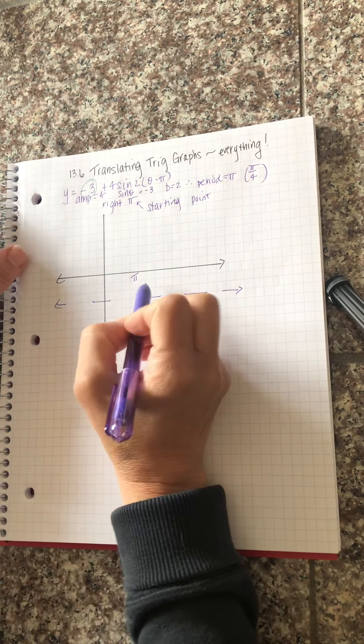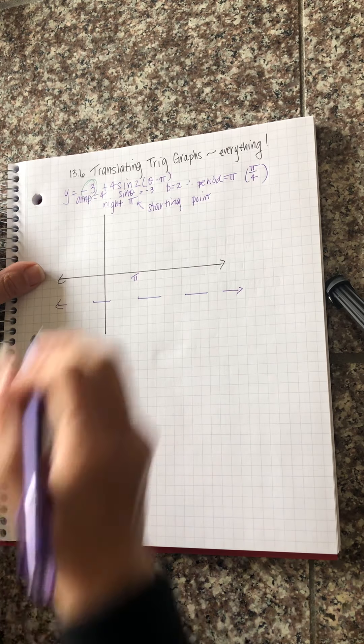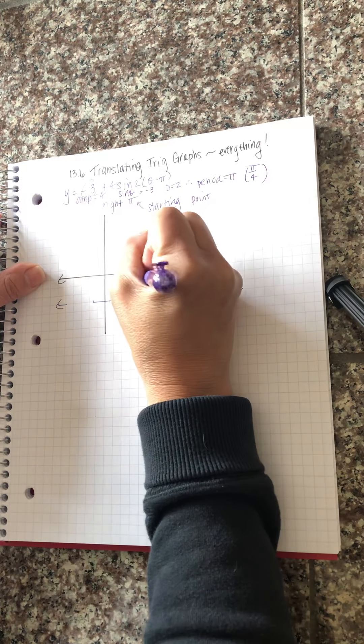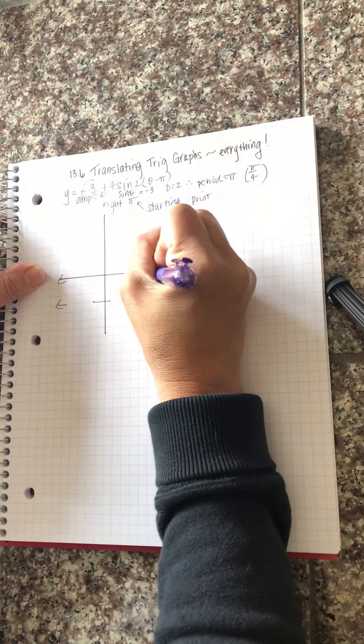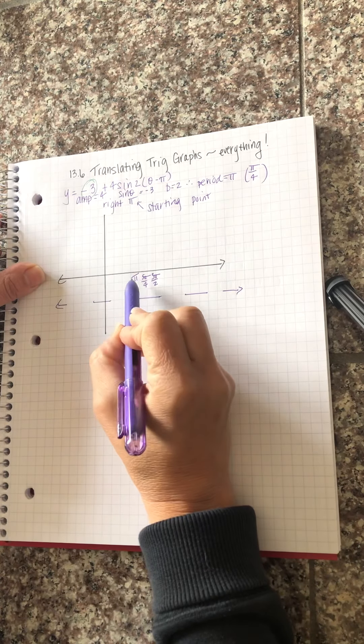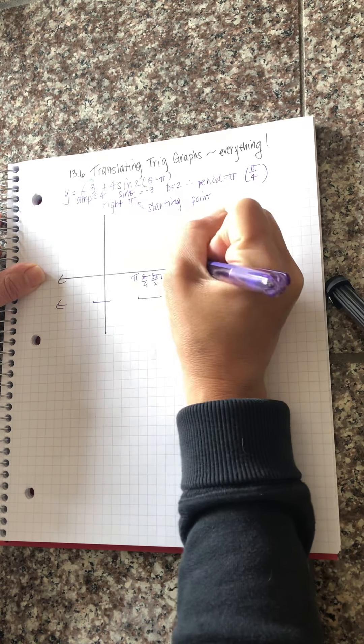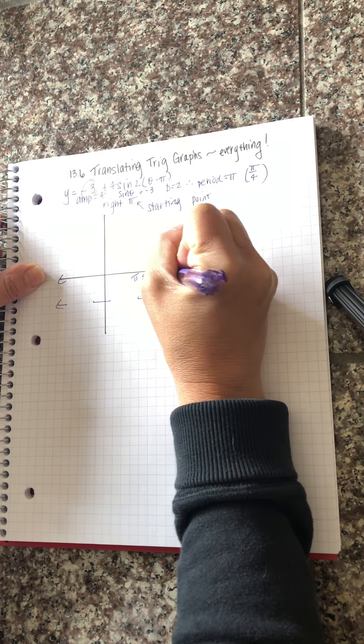Okay so each interval is a fourth so pi plus pi over four is five pi over four. Six pi over four which is three pi over two. I should have spaced it out more. Let's see, seven pi over four and eight pi over four which is two pi.